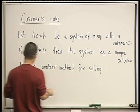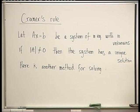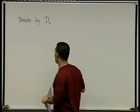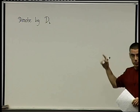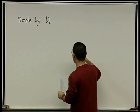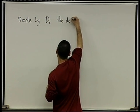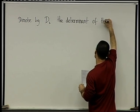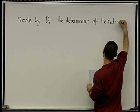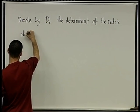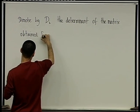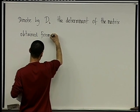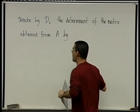So let's take a new board, denote, denote by d sub i, i ranges from 1 to n, so we're going to have n such di's, by di, the determinant of the matrix, the matrix obtained from A.